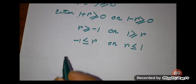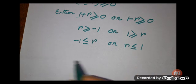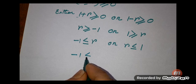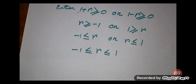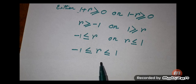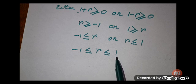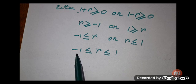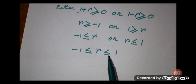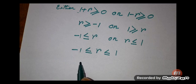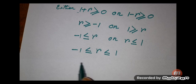From these two relations, we get minus 1 less than or equal to r less than or equal to 1. This proves that the correlation coefficient lies between minus 1 and plus 1. Hence, we have proved the property. Thank you.